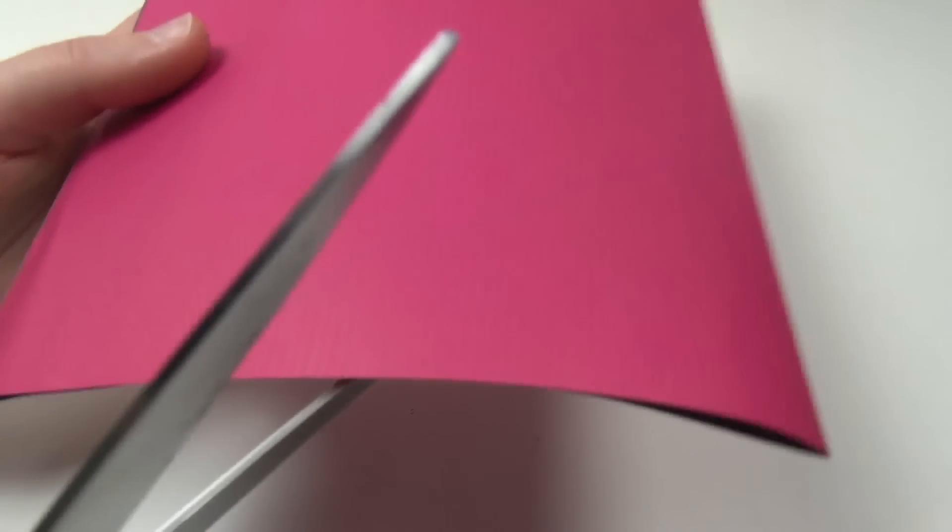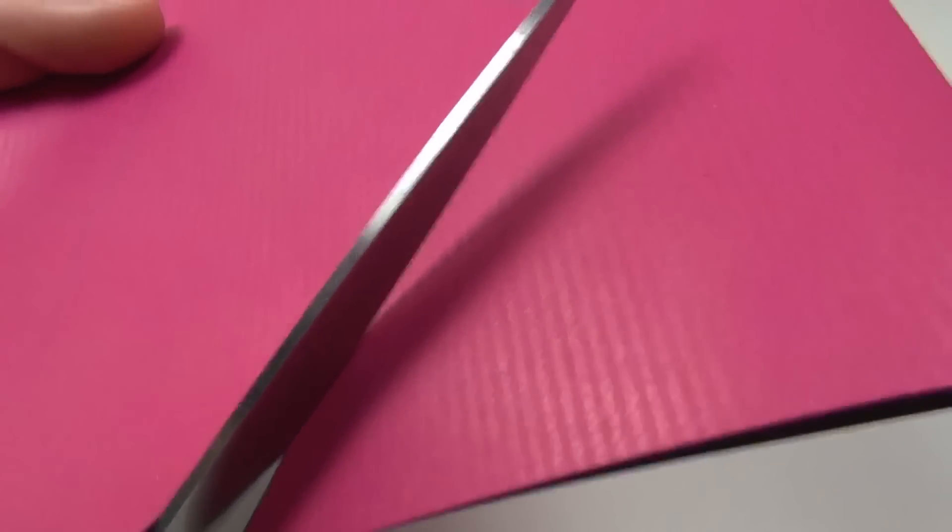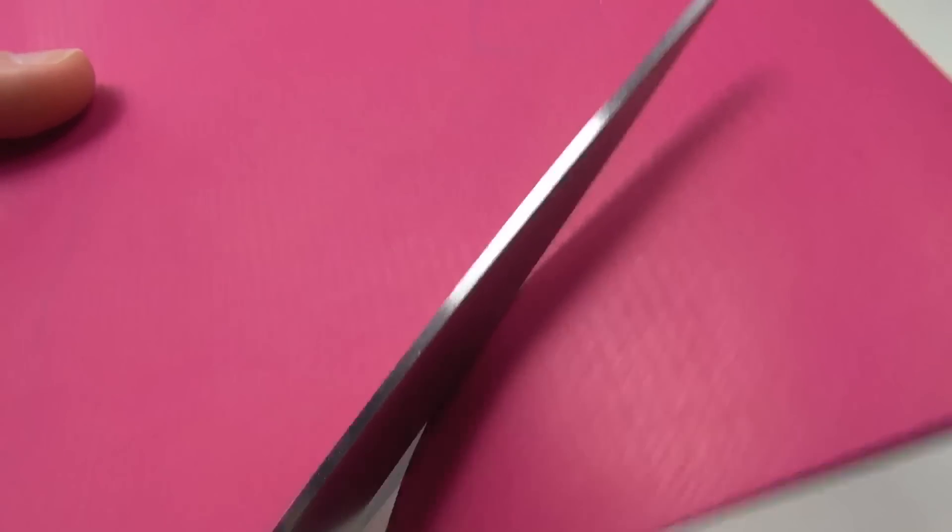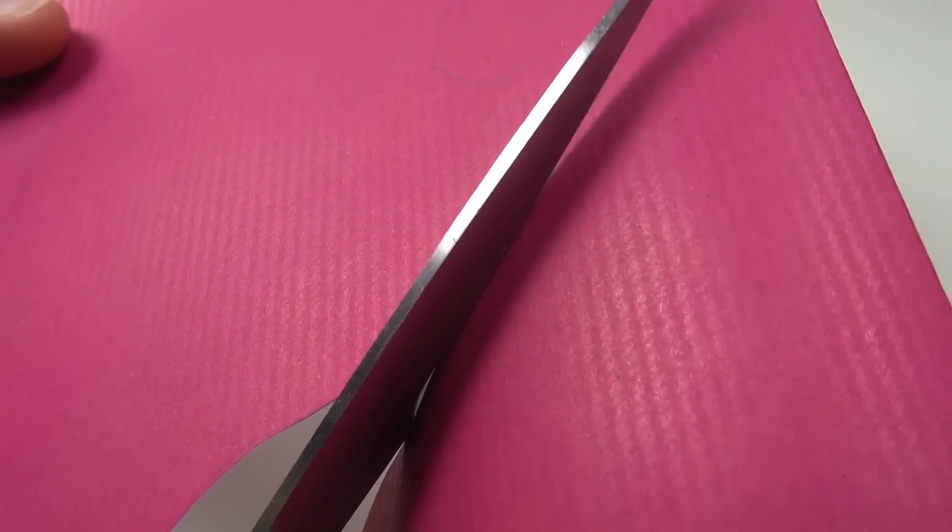And then we've got our hand and we're going to cut that out with the scissors. You can cut through both at the same time. That's the easiest way and the best one to get a straight line.